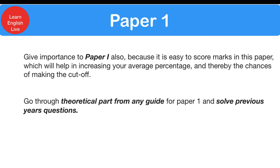We discussed Paper 1 already, but an important point is — do not take Paper 1 lightly because it is very scoring. If you can score around 40 to 45 out of 50 in Paper 1, it will be very good and you can easily qualify for JRF. Give equal importance to Paper 1, and for it, don't just solve MCQs — read the theoretical part from a guide first.